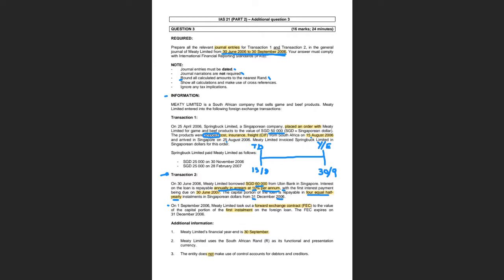On 1st September 2006, Meaty Limited took out a FEC — a Forward Exchange Contract — to the value of the capital portion of the first installment on the foreign loan. So they took out a FEC for 15,000 Singaporean dollars, and it expires on the 31st of December 2006 — the same date the payment is due. In additional information, we're told the year-end is 30 September.